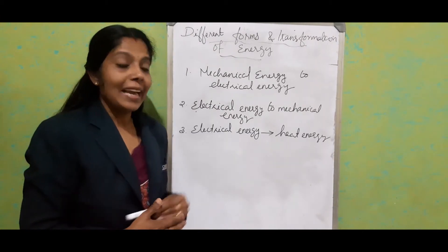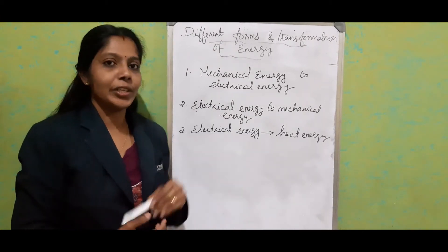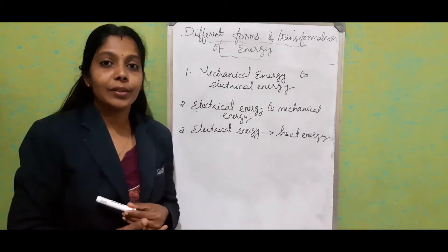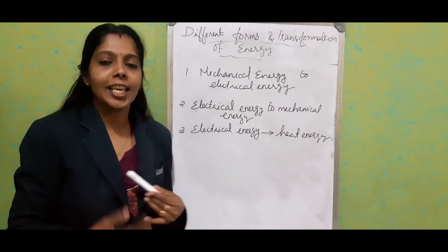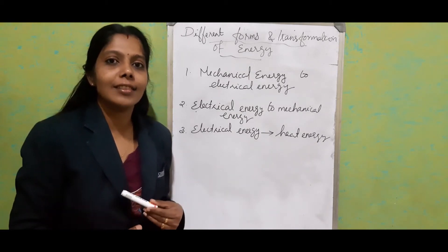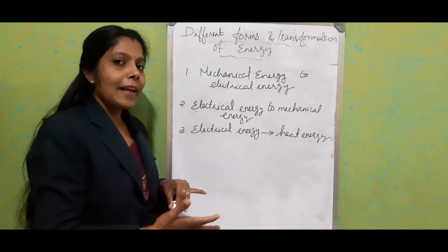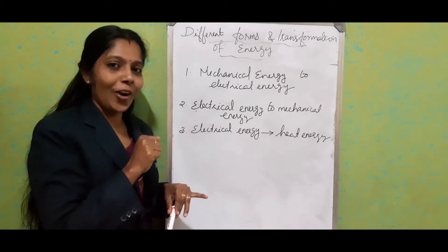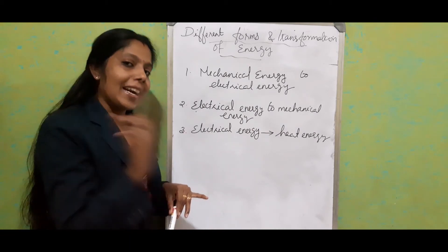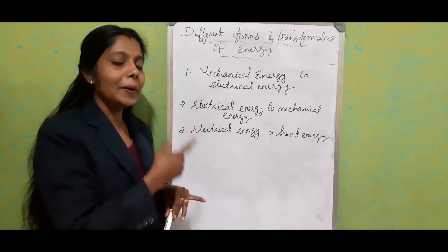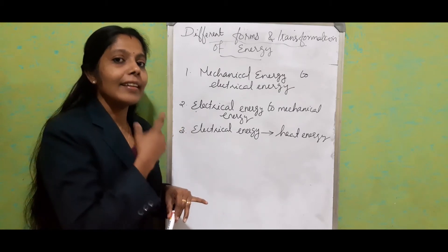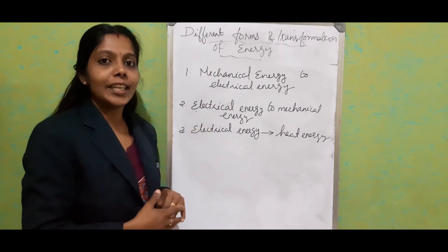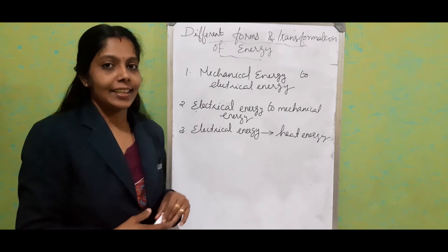Third one: electrical energy to heat energy. In our house, we use ovens, heaters, and toasters. When we put the switch on, electricity passes through the circuit and electrical energy is converted into heat energy.